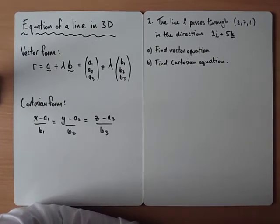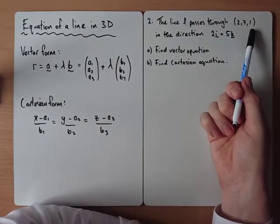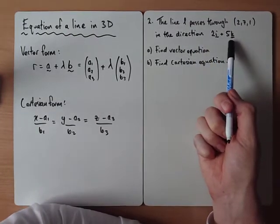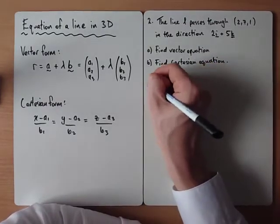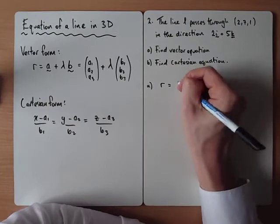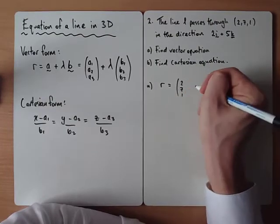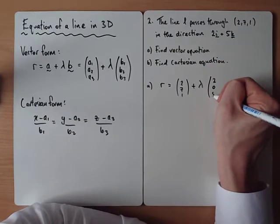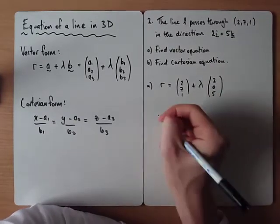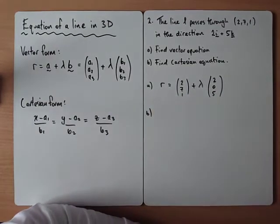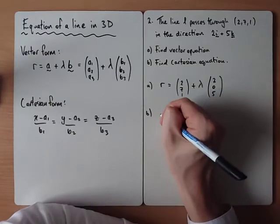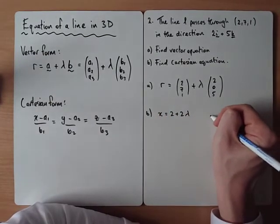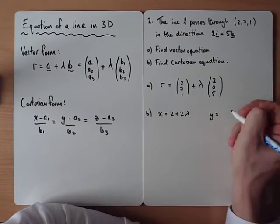Let's try one more. For the second one, we know that the line passes through the point (2,7,1) and the direction is given in this IJK form. And first of all, we just want to find the vector equation. So point on the line (2,7,1) constant times by the direction. Direction would be 2, 0, 5. We have to be slightly careful with this when we do the Cartesian equation. We know x equals 2 plus 2 lambda. We know y equals, well, y is just 7.